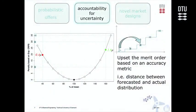That's why we proposed to introduce a penalty for uncertainty for stochastic producers. The basic idea is to upset the merit order based on an accuracy metric which depends on the distance between the forecasted and actual distribution.